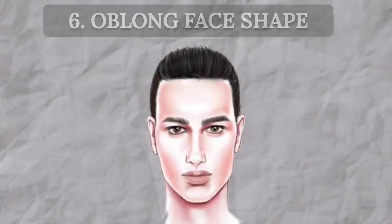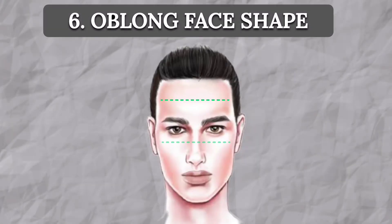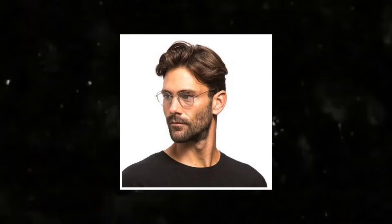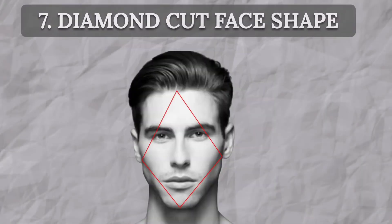An oblong face shape has the forehead, cheekbones, and jawline at the same width, with angular edges on the chin. Avoid hairstyles that make your head look longer or thinner. Men with diamond-shaped faces have wide cheekbones but a narrow jawline and forehead. Here it is better to add width to the forehead to make the face appear more oval.